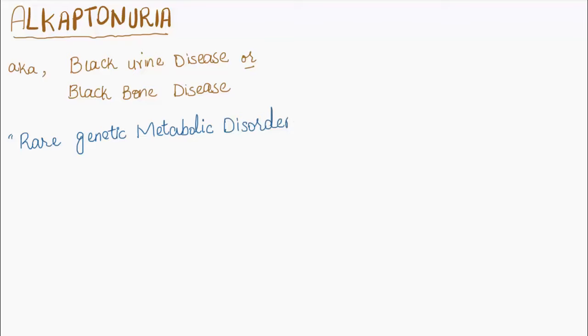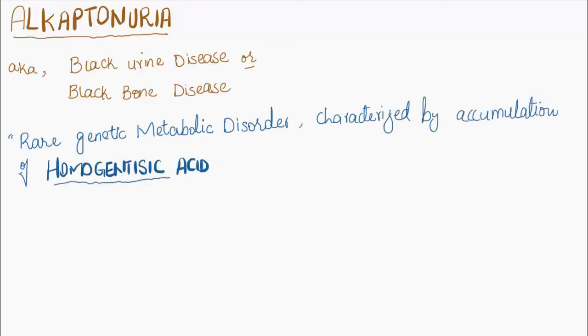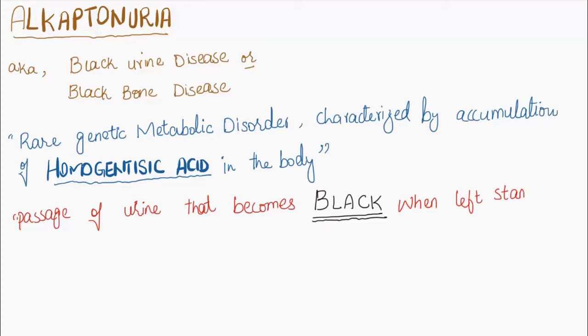Alkaptonuria, also known as black urine disease or black bone disease, is a rare genetic metabolic disorder characterized by accumulation of homogentisic acid in the body. The hallmark of the disease is passage of urine that becomes black when left standing.